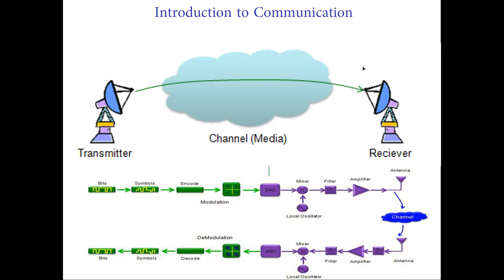So think with me: if above 20 kilohertz I don't hear anything, this means I can shift my signal to a higher frequency, and nobody around will hear that signal when I send it — because it's not within the range of your hearing capability. But how do I allow only my friend to receive my message? By using a filter.